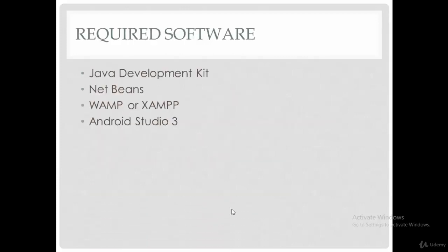So what are you going to need in this course? The required software: first, install the JDK — the Java Development Kit. Next, install NetBeans so you can create PHP files, or you can use Notepad++ or any editor — it's up to you. Third, a web server such as XAMPP so we can upload our PHP files. And last, Android Studio 3. All these softwares are free, so you don't need to pay anything.